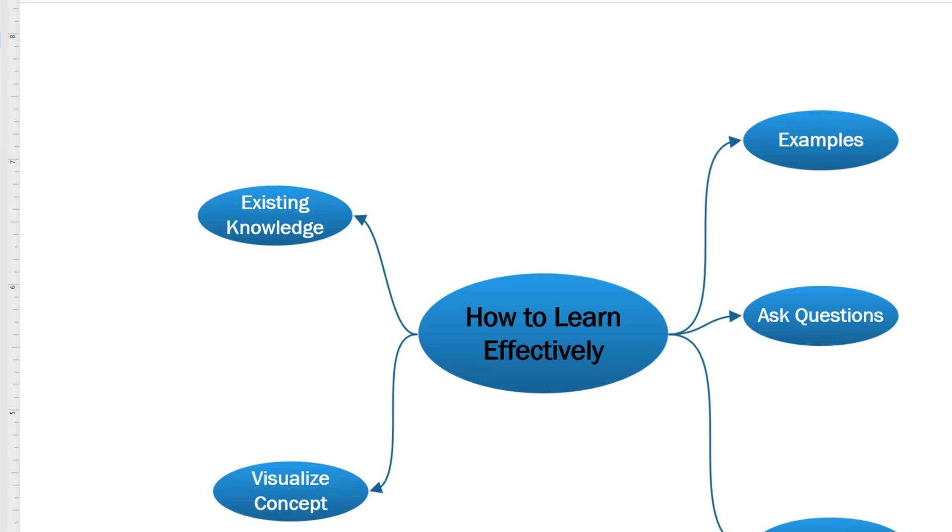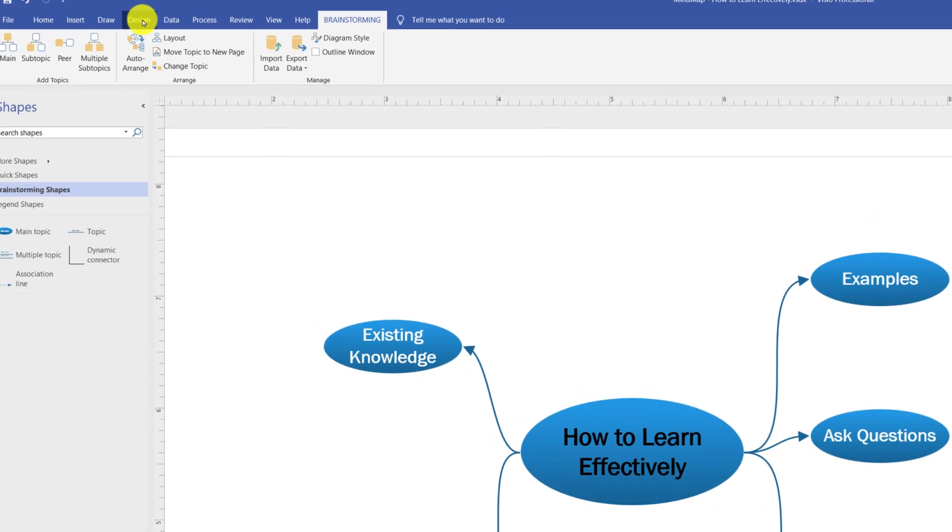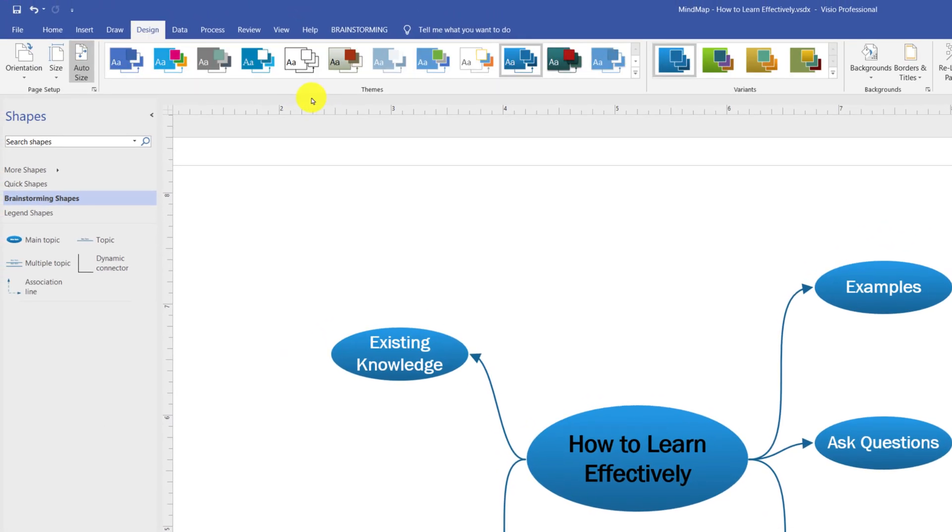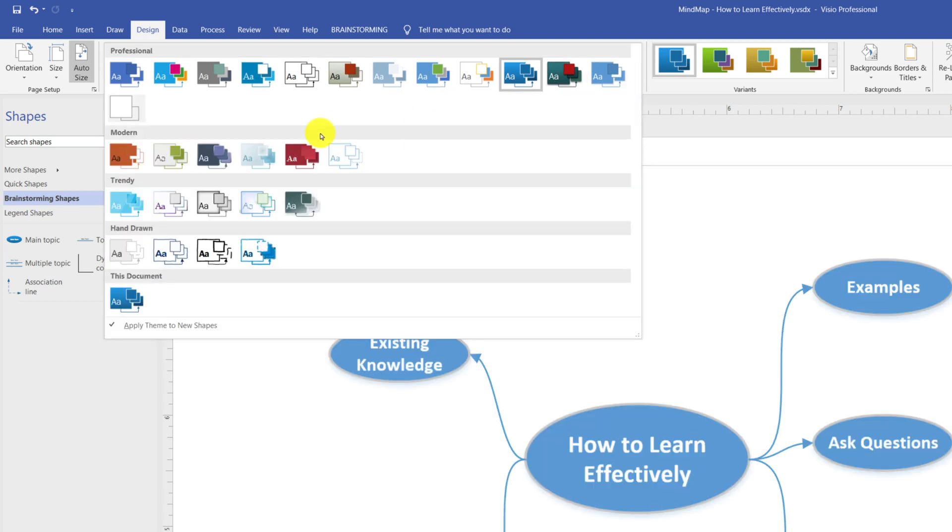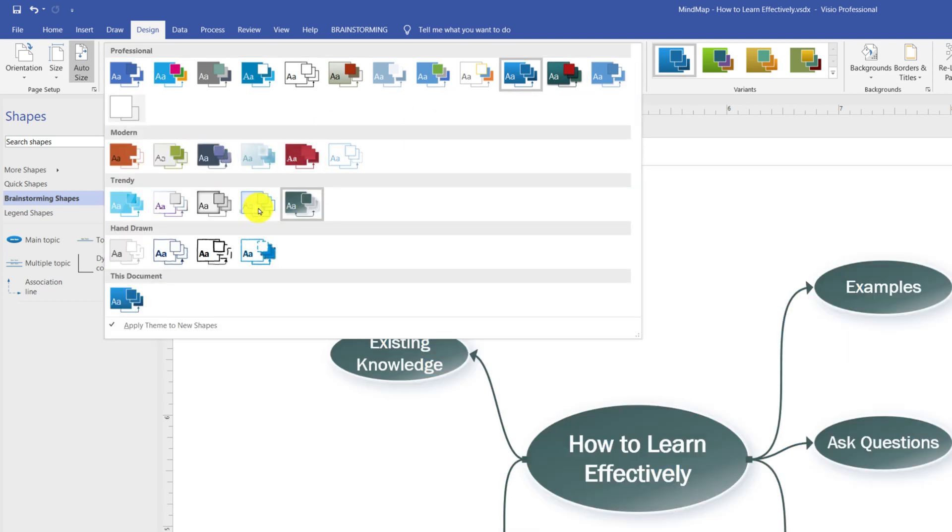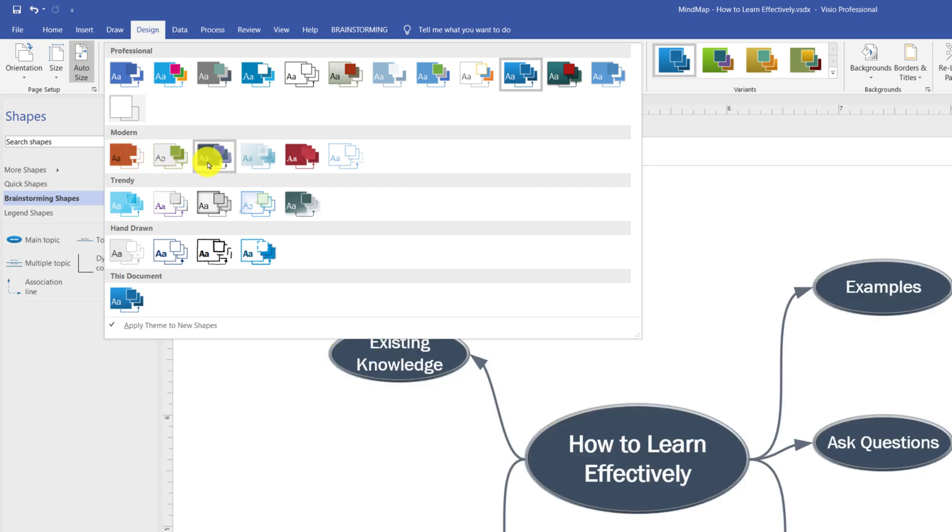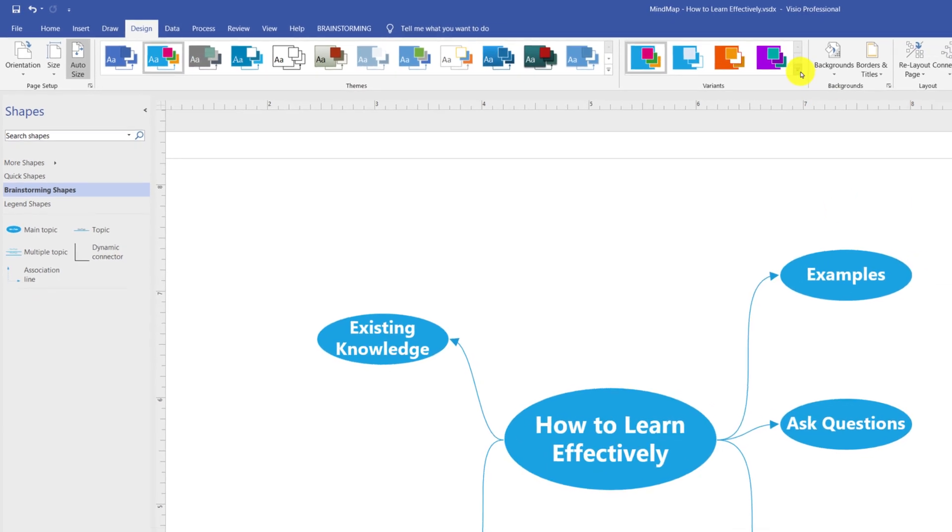Other features that might help you improve the appeal of the diagram are available in the design tab. Here you have multiple themes, and you can go through the themes and see how your diagram will look with the different theme. Let's say that you picked the theme, and now you have access to variants.